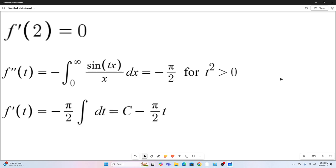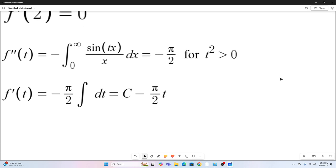So we reintegrate to get F prime of T. So F prime of T is negative pi over two integral DT. And that will evaluate to C minus pi over two T. And then we'll use our found value for F prime of T. That was F prime of two is equal to zero. To give us C is equal to pi.